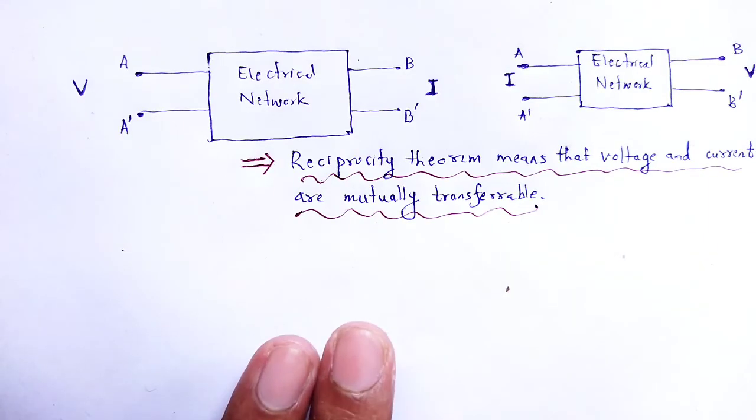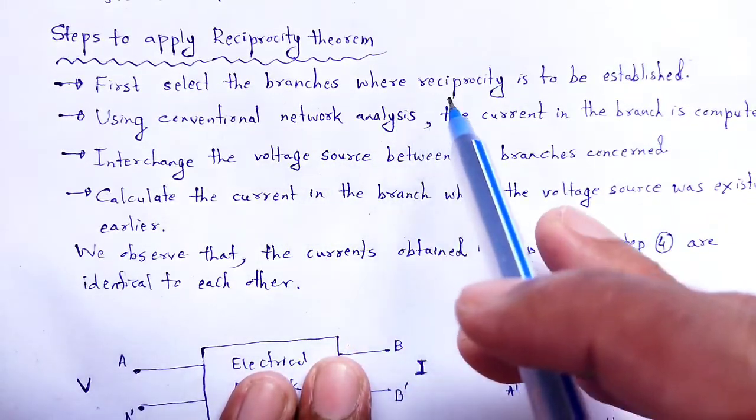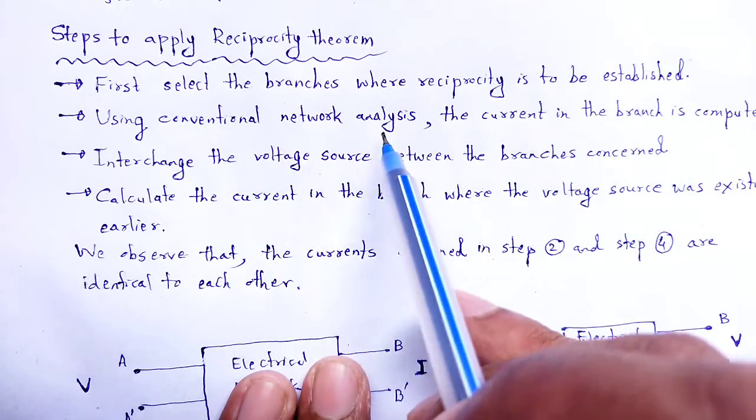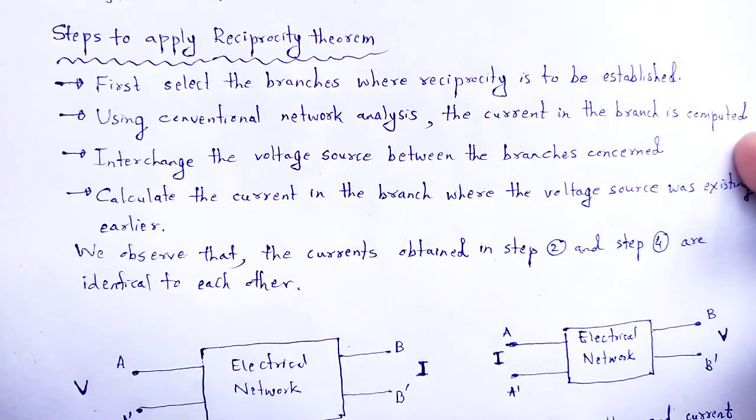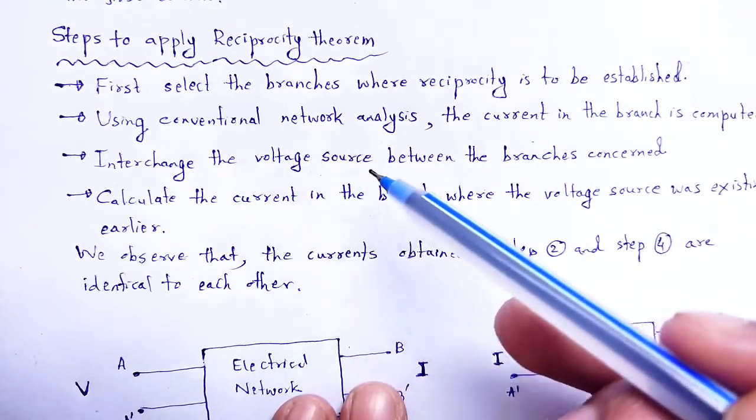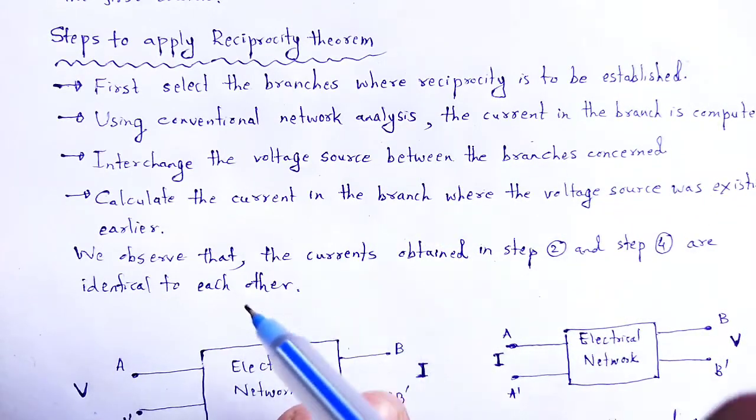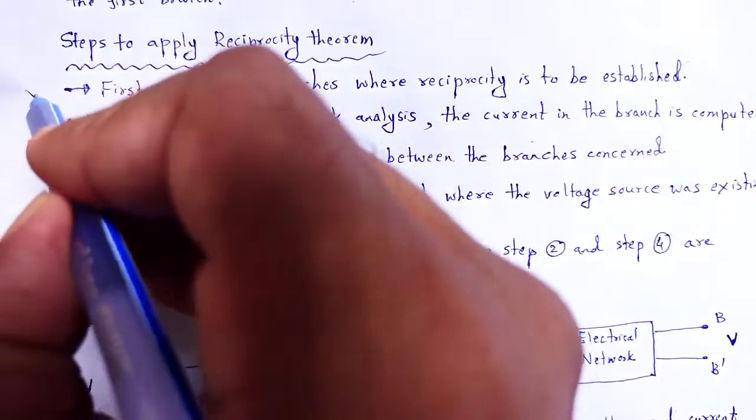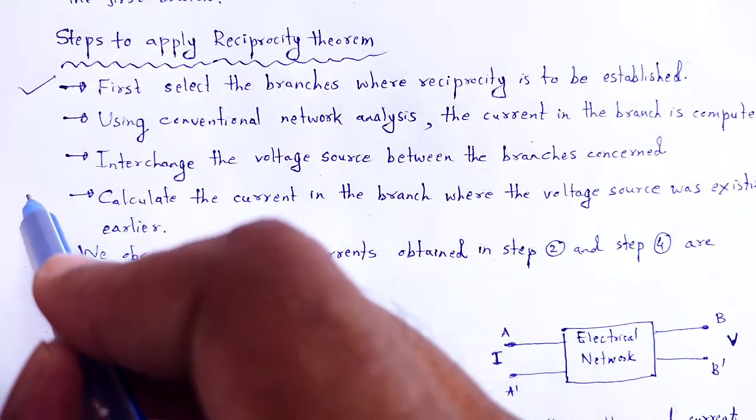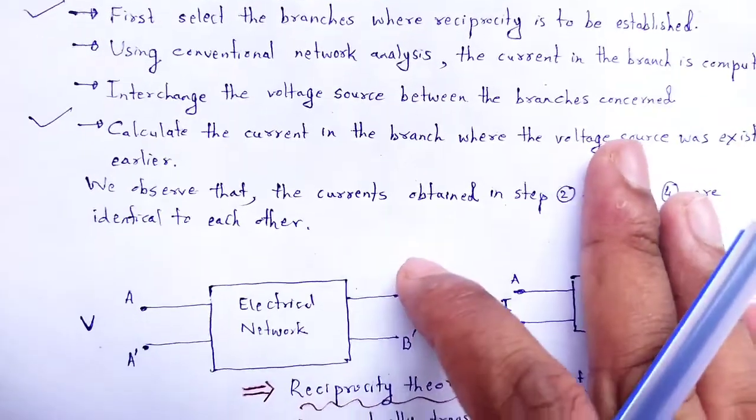There are some steps we have to follow to apply the reciprocity theorem. First, select the branches where reciprocity is to be established. Then using the conventional network analysis, the current in the branch is computed. Conventional network analysis means we can use Kirchoff's voltage law to solve that network. Interchange the voltage source between the branches, and calculate the current in the branch where the voltage source existed earlier. We observe the currents obtained in step 2 and step 4 are identical to each other.